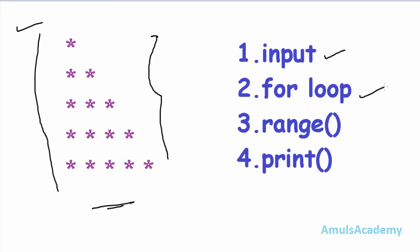The second requirement is for loops. For this program we need two for loops — one for rows and one for columns. So for rows we need one for loop, and for columns we need another for loop.